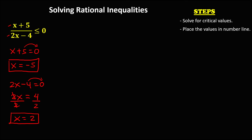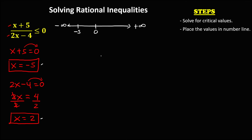After solving for the critical values, we need to place them on a number line. The number line has negative infinity on the left and positive infinity on the right, with zero in the middle. The first critical value, negative 5, is placed on the left of zero, and positive 2 is placed on the right of zero.